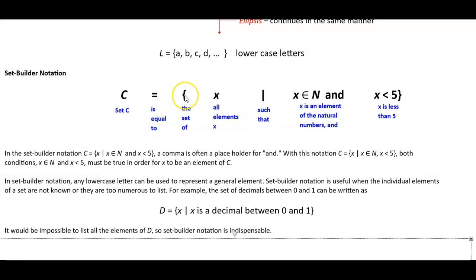We have the equal sign, which is equal to. We have this first brace, which says the set of X being all elements x. This line represents such that. And then here we say that x is an element of this N, which is the natural numbers. And we would say that x is less than 5.